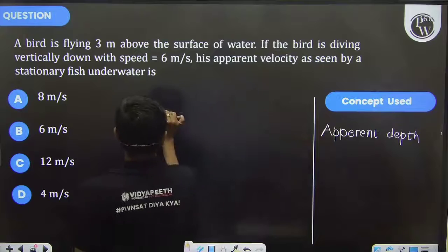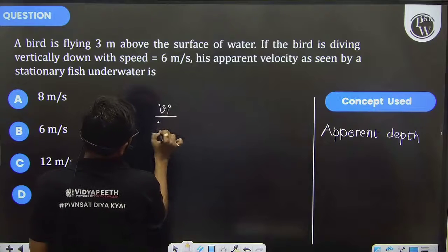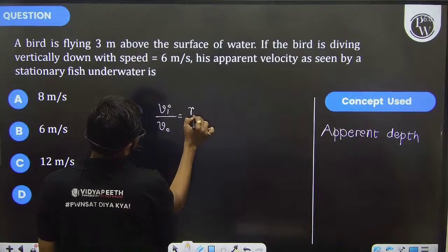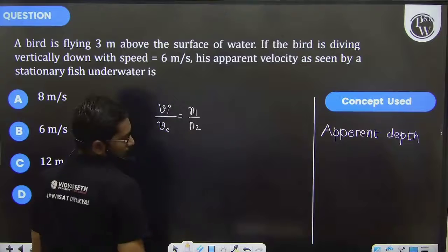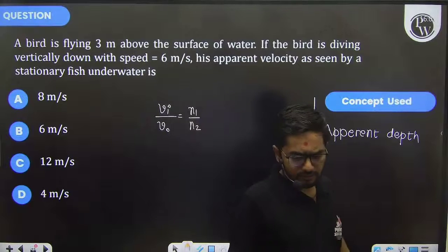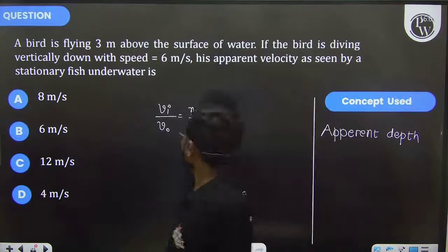But this time, v_i over v_0, that is n1 over n2. And in this case, n1 over n2...